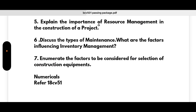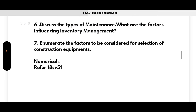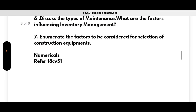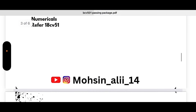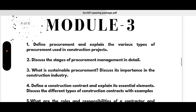Also: discuss the types of maintenance; what are the factors influencing inventory management; enumerate the factors to be considered for selection of construction equipment. For numericals, refer to the 18CV51 papers. If you don't have those papers, comment below and I will upload the 18CV51 papers on my Instagram account. Coming to Module 3: define procurement and explain the various types of procurement used in construction projects.